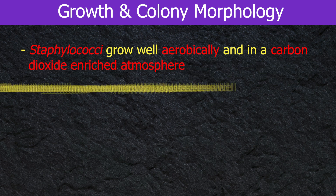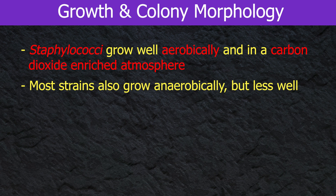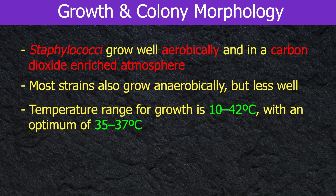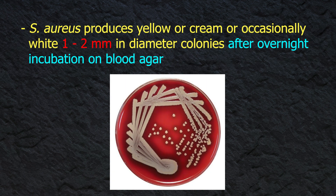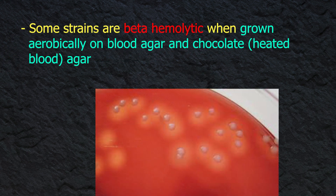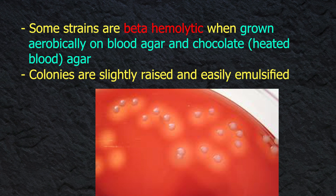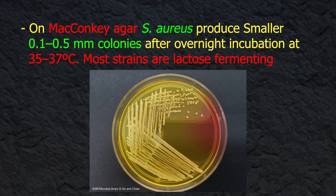Growth and colony morphology: Staphylococci grow well aerobically and in a carbon dioxide-enriched atmosphere. Most strains also grow anaerobically but less well. The temperature range for growth is 10 to 42°C with an optimum of 35 to 37°C. S. aureus produces yellow, golden, or occasionally white colonies, 1 to 2 mm in diameter, after overnight incubation. On blood agar, some strains are beta-hemolytic when grown aerobically. Colonies are slightly raised and easily emulsified.